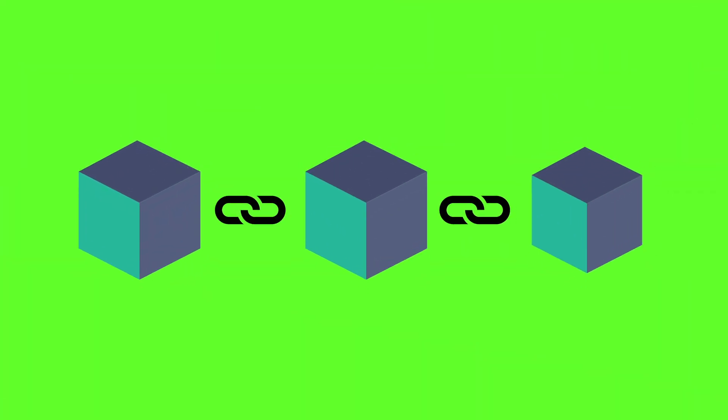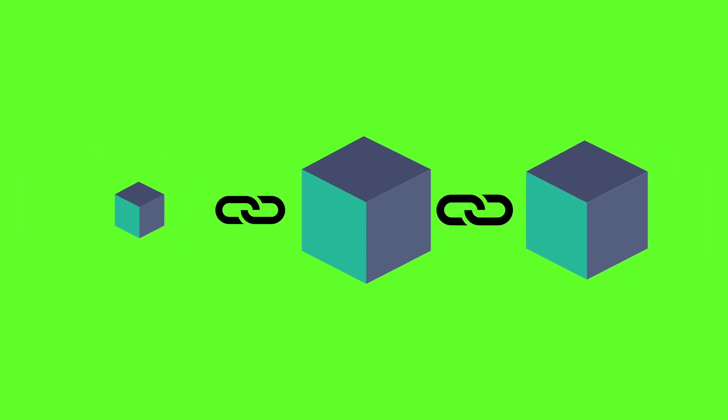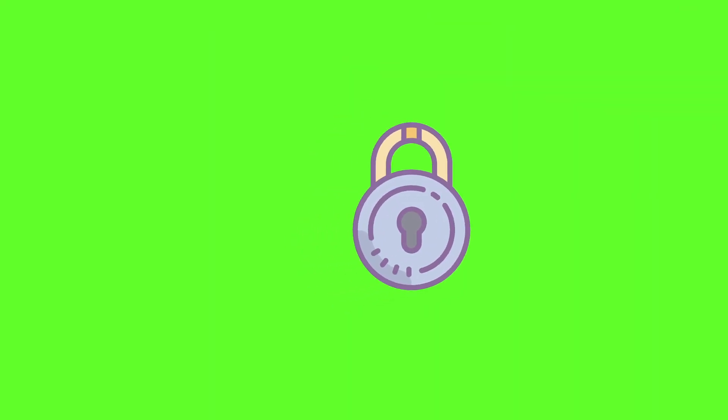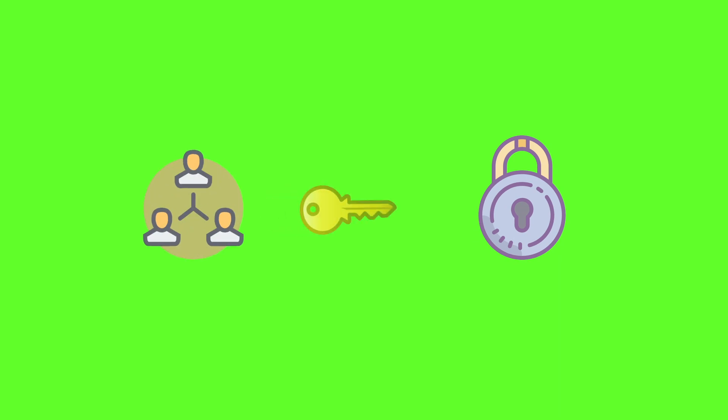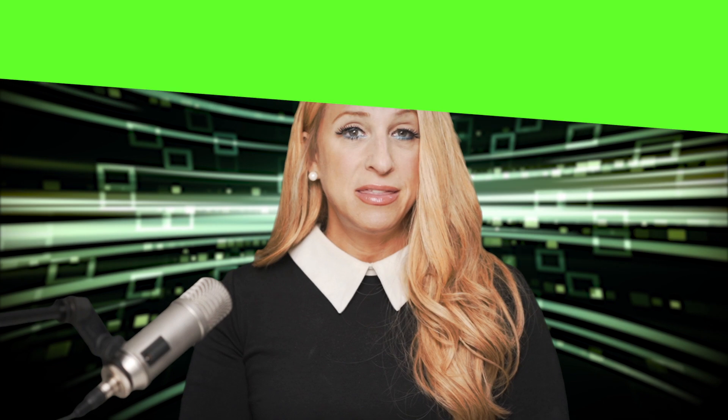When it comes to the security of blockchain, understand that all blocks are connected to the block before it and after it. This makes it very difficult to tamper with any single record because a hacker would have to change the block containing that record as well as those that are linked to it to avoid being detected. Also note that the records on the blockchain are secured through cryptography. Network participants have their own private keys that are assigned to each transaction that they make,